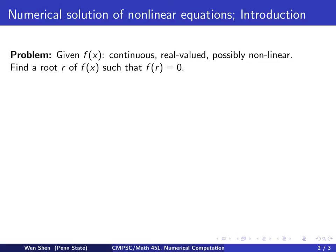The problem setting is the following. We are given a function f of x. It's a continuous function and real valued, and possibly nonlinear. Because if f(x) is a linear function, then finding the root is trivial. So we want to find the root for this function such that at the root r, the function admits 0 as its value. This is the same as solving the equation f(x) equals 0, where f is a nonlinear function.